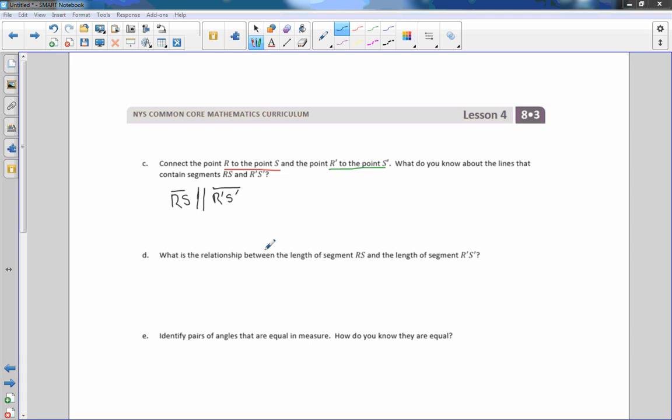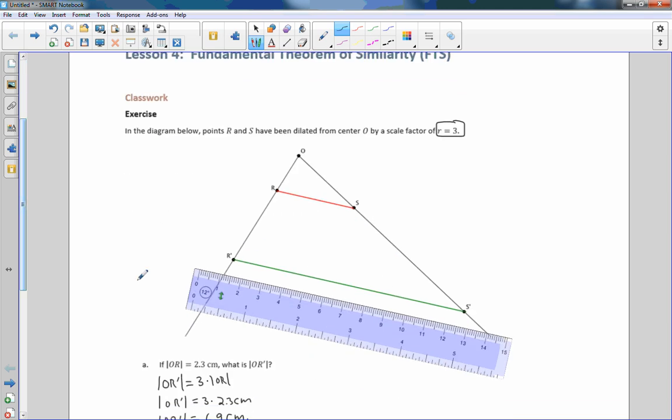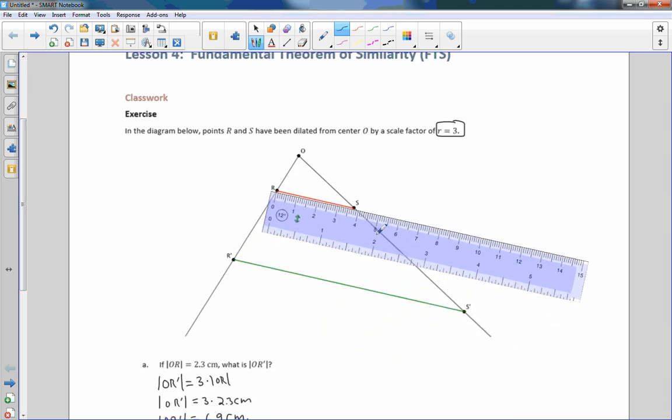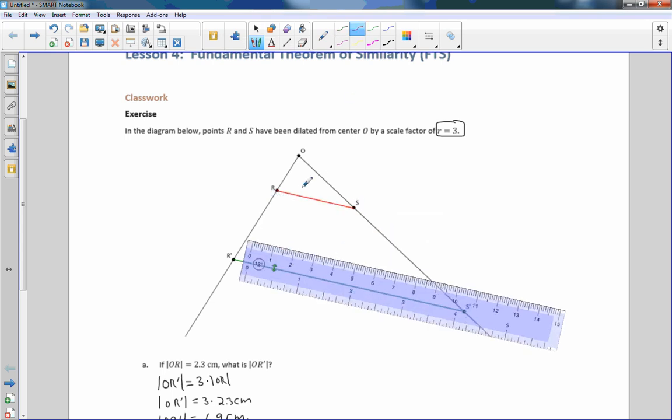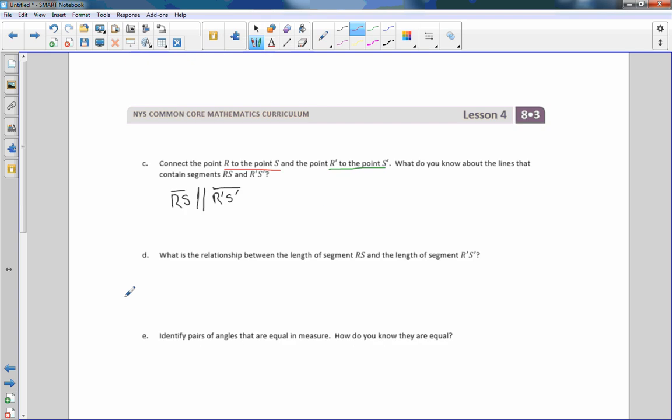Now D says, what is the relationship between the length of the segment RS and the length of segment R prime S prime? So now I'm going to go back, and I'm going to measure these. So if I measure R prime or RS as accurately as possible, put that right on zero, that is 35678. So that looks like 38 millimeters. RS is 38 millimeters. So I'm going to write here, the length of RS equals 38 millimeters.